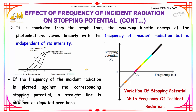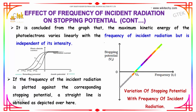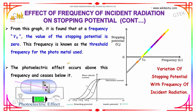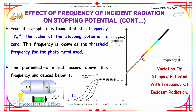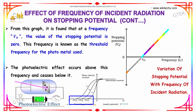If the frequency of the incident radiation is plotted against the corresponding stopping potential, a straight line is obtained. From this graph it is found that at a certain frequency the value of stopping potential becomes zero. This frequency is known as the threshold frequency of the photometal used, and the photoelectric effect occurs above this frequency and ceases below it.